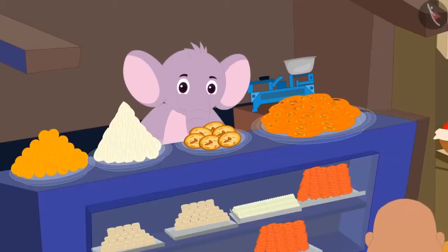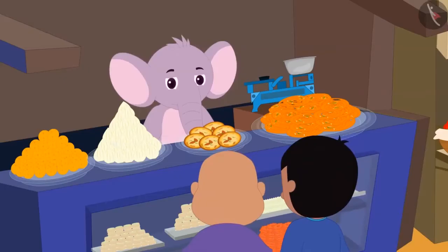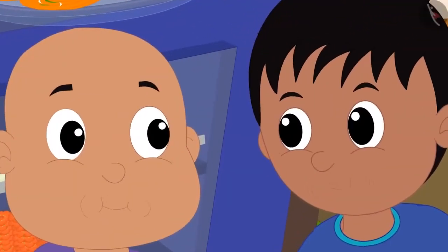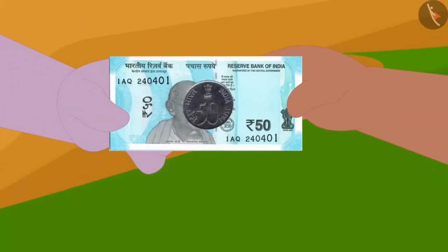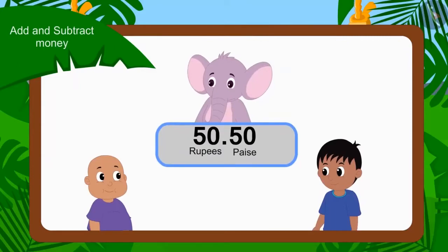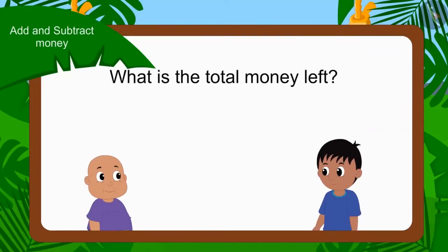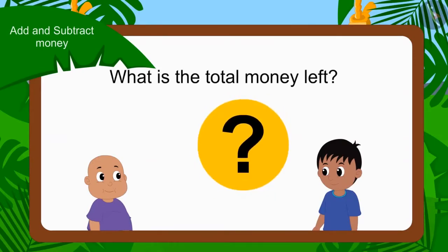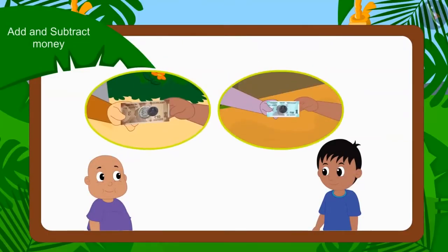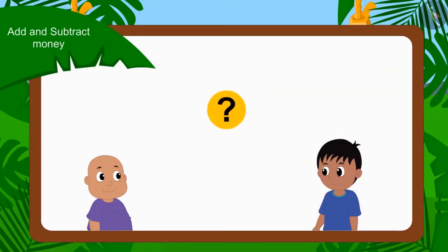He paid Babban for the ice cream and later reached Appu's sweet shop. They ate a stomach full of samosa, jalebi and barfi. If they gave Appu a total of 50 rupees 50 paise for all the things, can you tell how many rupees are left with both of them now? First, we will find out the total amount spent by both of them. Children, can you add these two amounts and tell how much money Raju and Bablu have spent together?